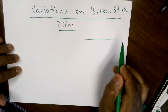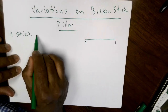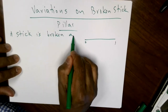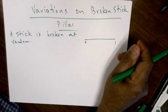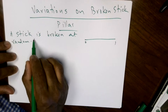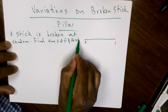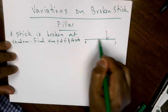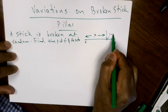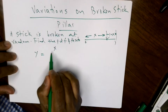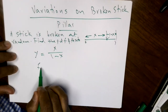Let's look at this problem. We have a stick of some length, let's say length 1, and it's broken at random. So a stick broken at random — obviously you get two pieces. The question is: find the PDF, the probability density function, of the ratio of the two pieces.